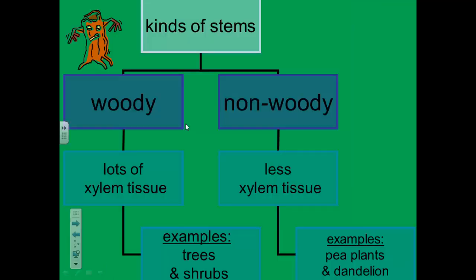We are next going to talk about different kinds of stems. Some are woody and some are non-woody. Woody stems have lots of xylem tissue carrying food and nutrients up the stems. Trees and shrubs have woody stems. The wood of conifers, such as pine trees, is softwood. The wood of trees with broad leaves is harder. Pea plants and dandelions are examples of plants that have non-woody stems. Their stems have much less xylem tissue.